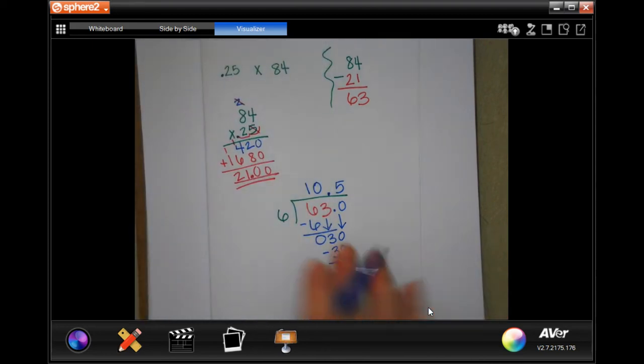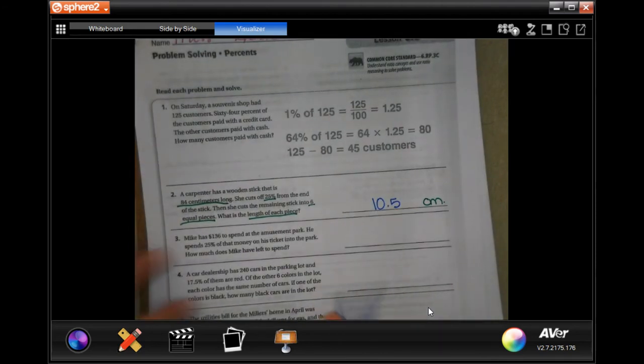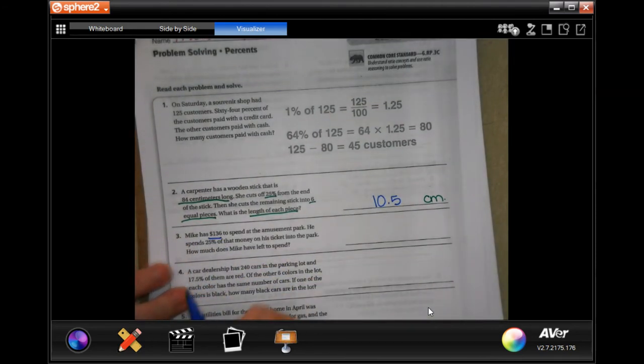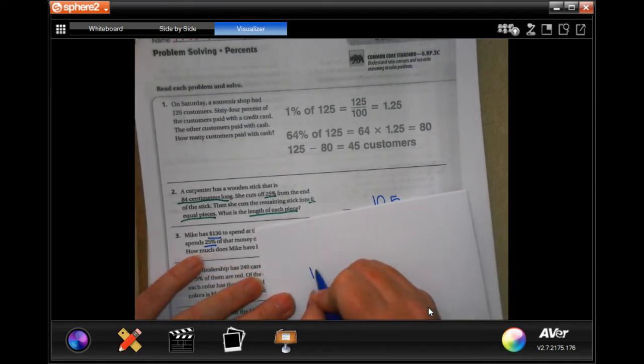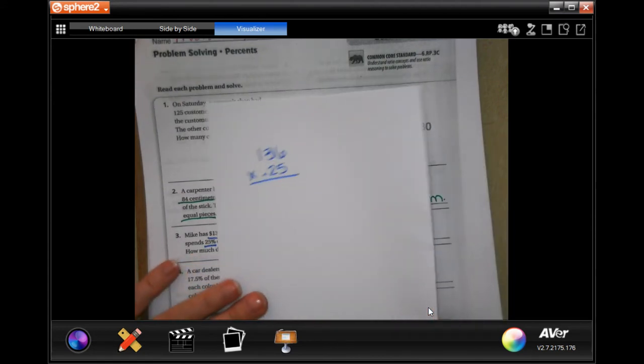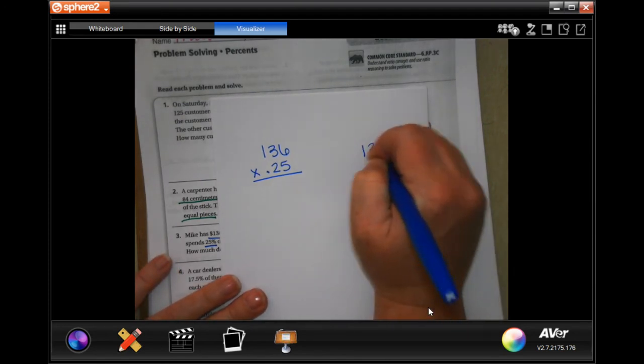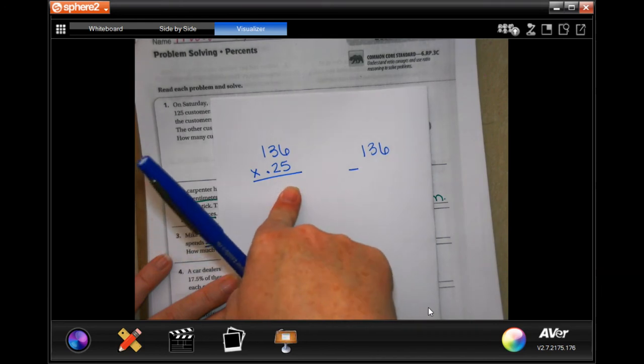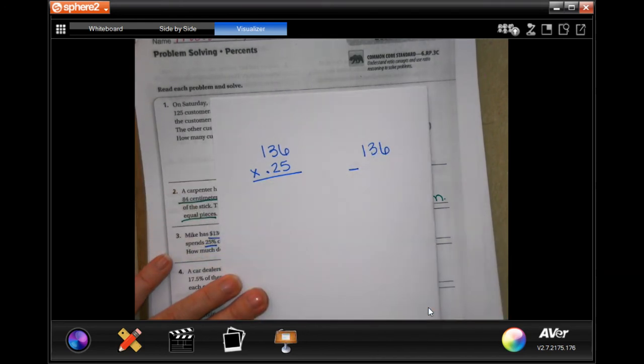All right. So, number 3. Mike has $136 to spend at an amusement park. He spends 25% of that money on his ticket into the park. How much does he have left to spend? So, we are going to do 136. And, I'm going to turn my 25% into a decimal. And, we're going to multiply it to find out how much he spent. Then, we're going to take that $136 and take away how much he spent. And, that will be how much he has left. Multi-step problem.